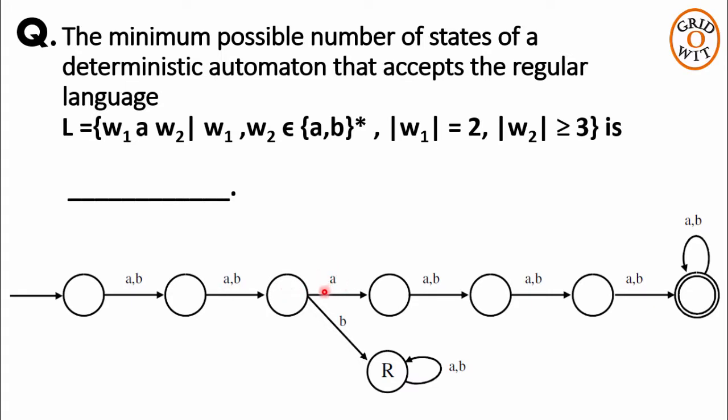On third position b is not allowed. That's why if b occurs at third position we send the machine to the dead state.